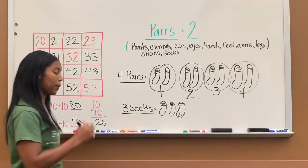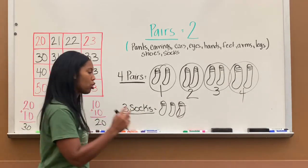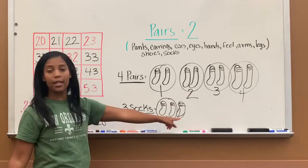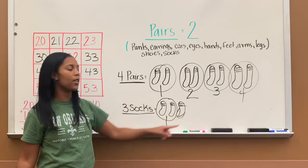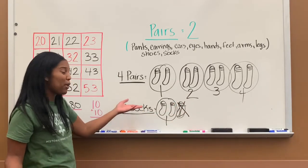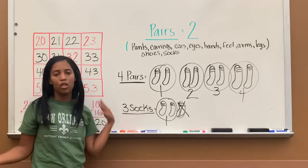Now let's circle the pairs. Remember our pair comes in how many? Two. Plus one, one. This is not a pair. If it's one by itself, it is not a pair. So we're going to X that out because it's not a pair. So how many pairs can I make from three socks? Just one pair.